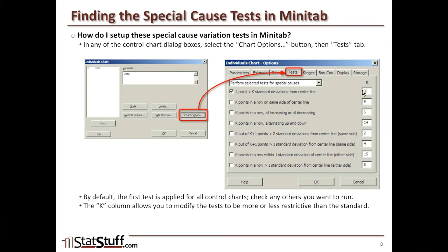The K column on the far right allows you to modify and tweak those tests if you want to become more or less restrictive than the general standard applied for the test.